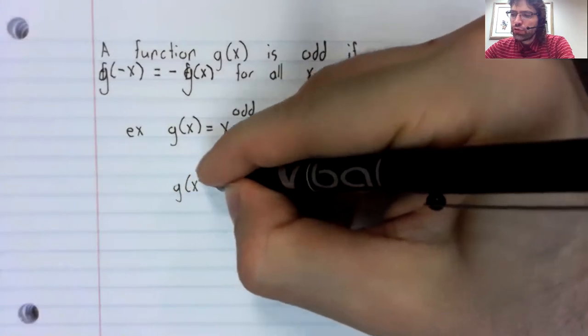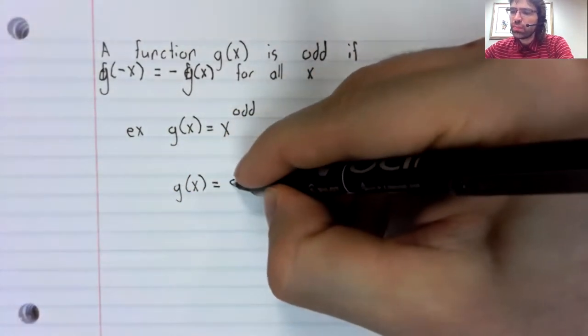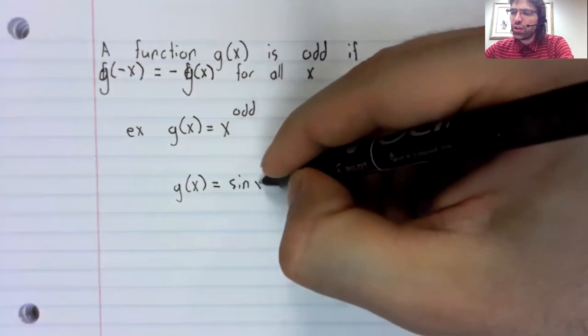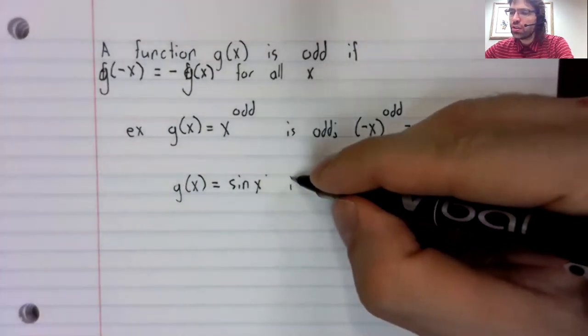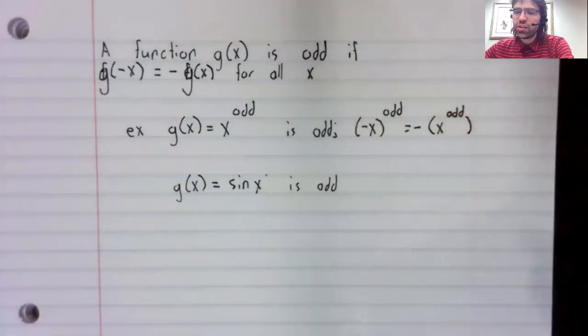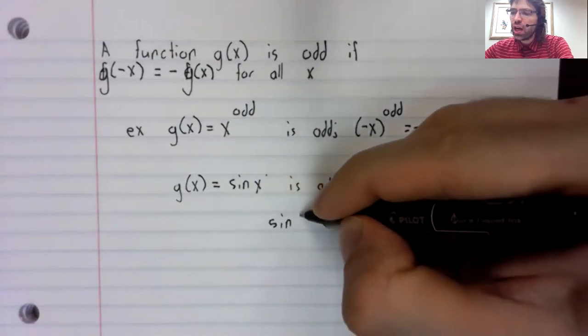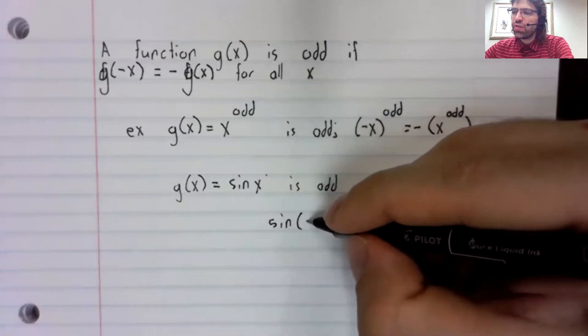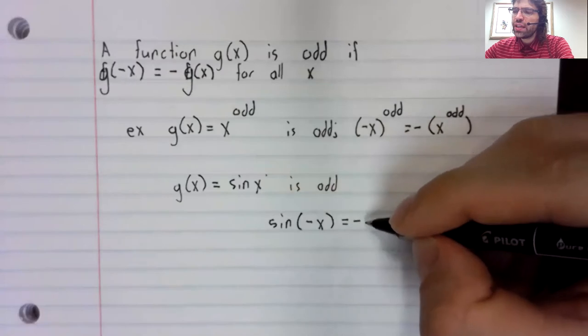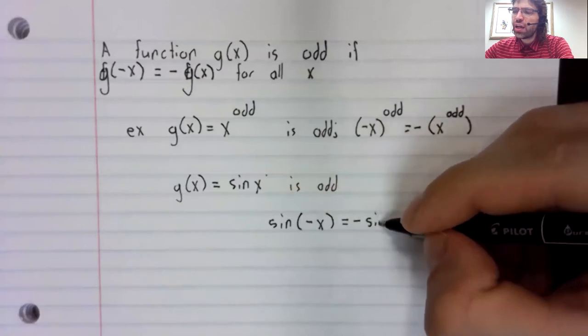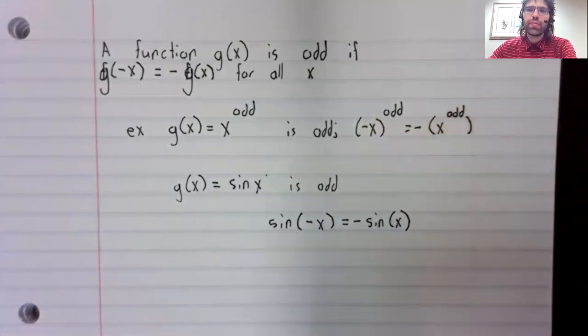And relevant for this course, the sine of x is an odd function. So if you have the sine of negative x, that's negative the sine of positive x.